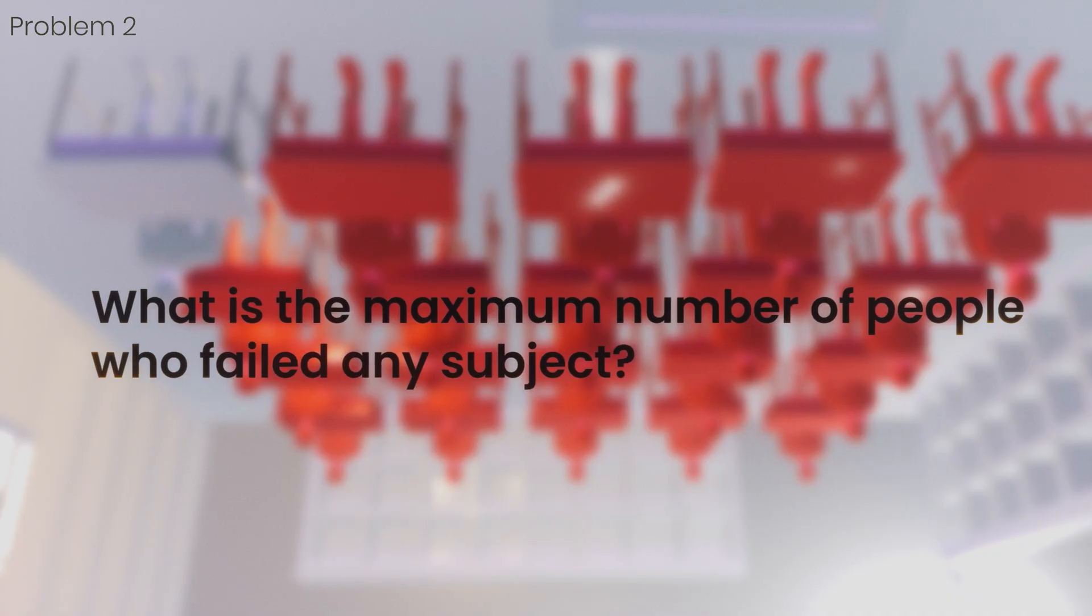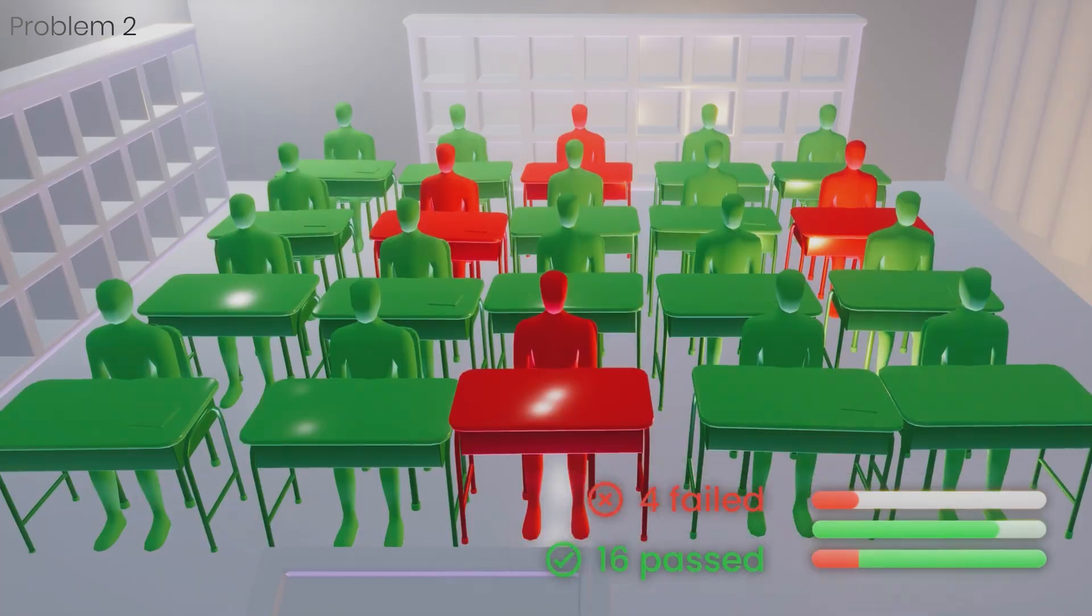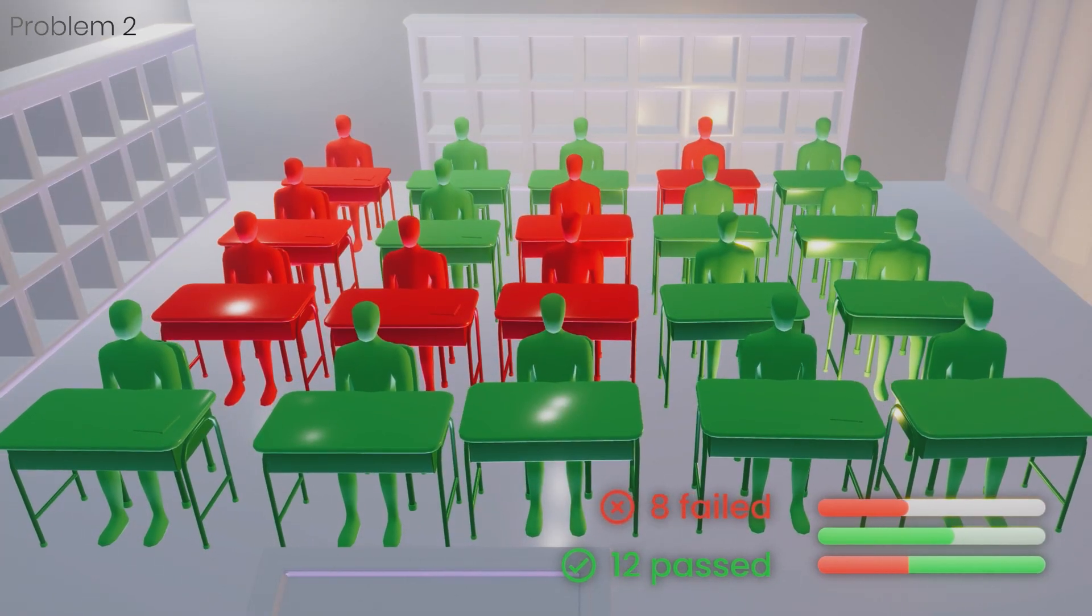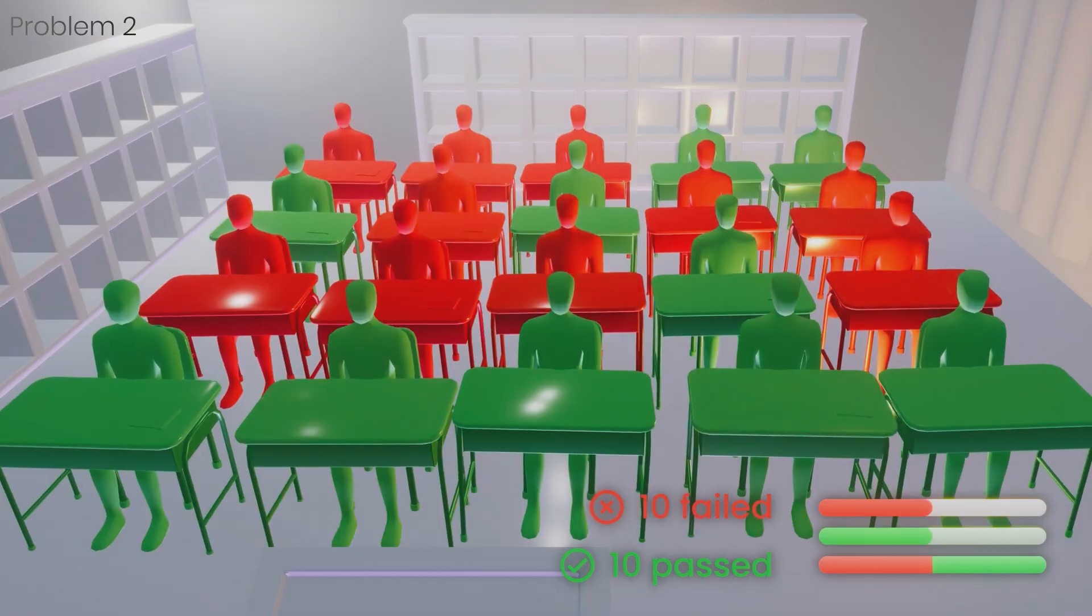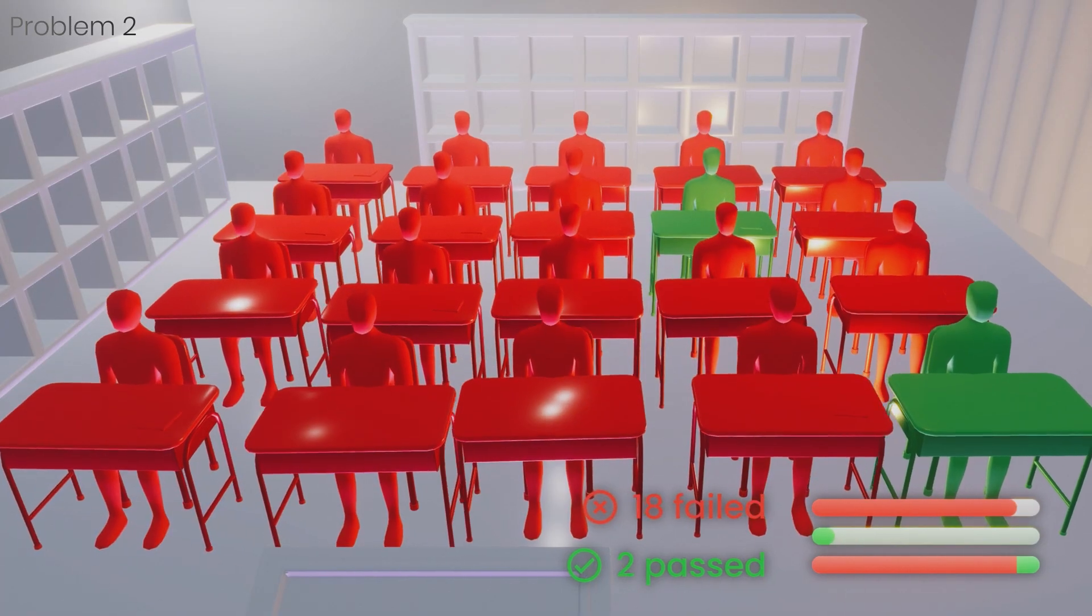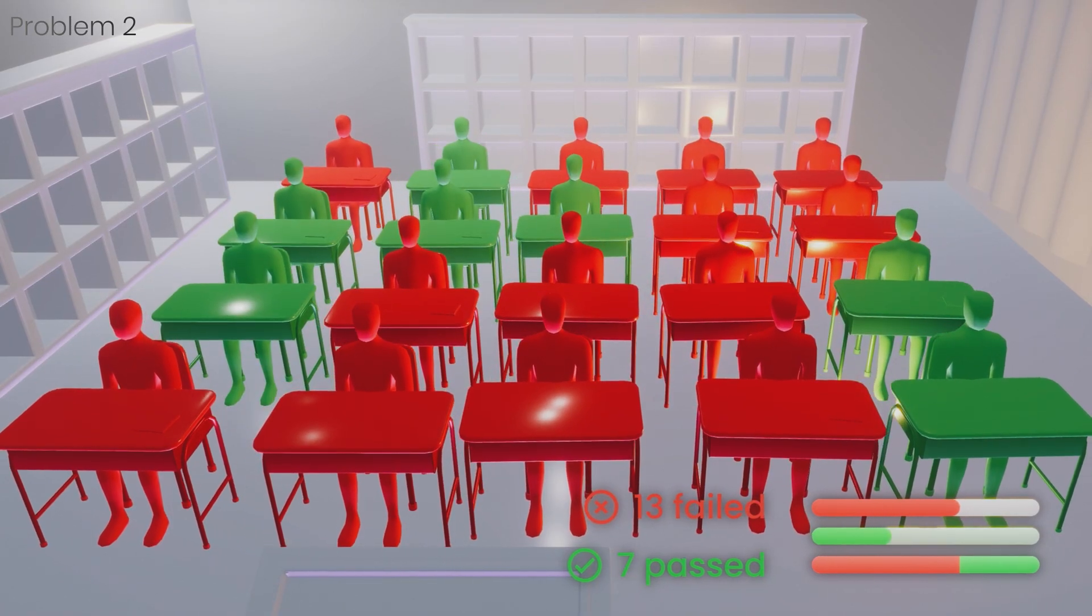To increase the number of people who failed any subject, we have to decrease the number of people who failed more than one subject. This means there will be a broad distribution of failures across the class, minimizing the number of students who could have passed all three.